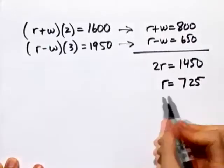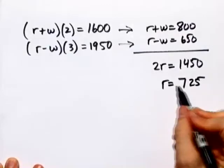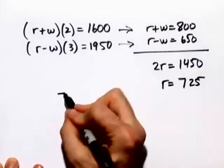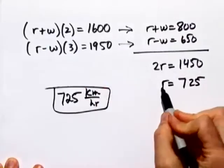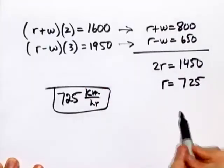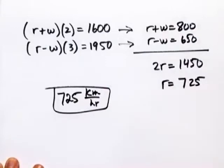But what are the units? Well, remember the units were in kilometers and in hours. So r as a rate or velocity would be 725 kilometers per hour. This is the rate of our airplane, r. That would be the rate if there wasn't a wind. But the wind, remember, speeds it up and slows it down.